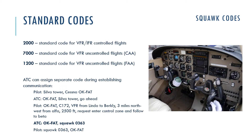Squawk codes are set on the front of the transponder. There are some reserved codes, standard codes, and emergency codes. For standard codes: 2000 is the standard code for IFR controlled flights — you set this code before takeoff when you file your IFR flight plan. 7000 is the standard code for VFR uncontrolled flights in Europe by CAA rules. 1200 is the standard code for VFR uncontrolled flights in the United States. Please check your rules in your country, as this standard code can be different.